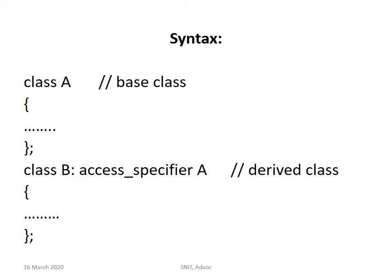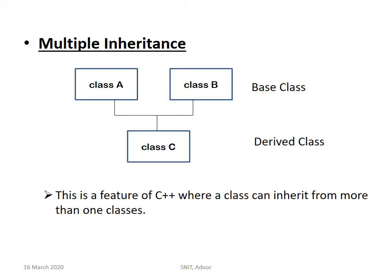The syntax is: class A is the base class — open the bracket, write the content, close the curly bracket and put a semicolon. A class when it is finished is always ended with a closing bracket followed by a semicolon. Now class B colon access-specifier A — that is the derived class. Class B has been derived from class A, and A's access specifier also we have to specify here, because many classes will be there in a program. You have to specify which class is the child of which class. Class B access-specifier A means B is the child class derived from class A. That is single inheritance — a one-to-one inheritance.